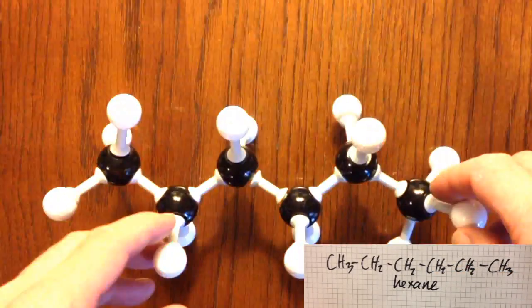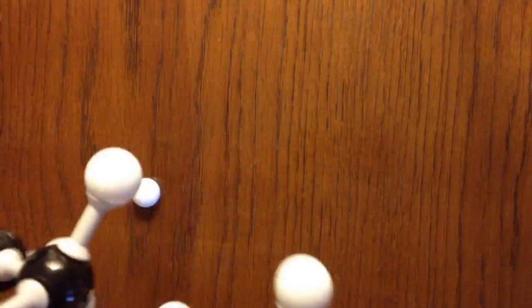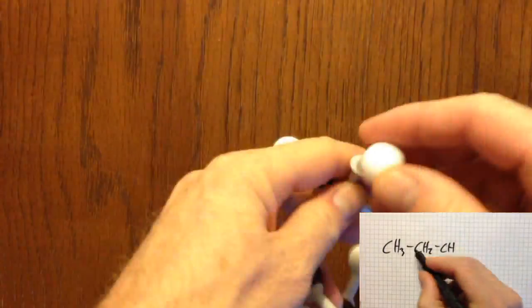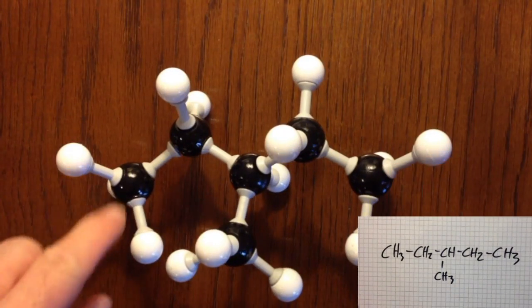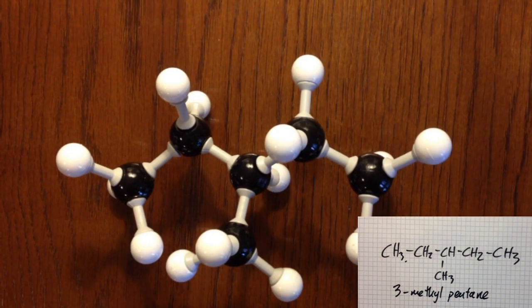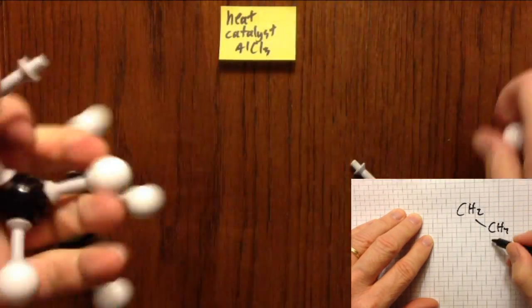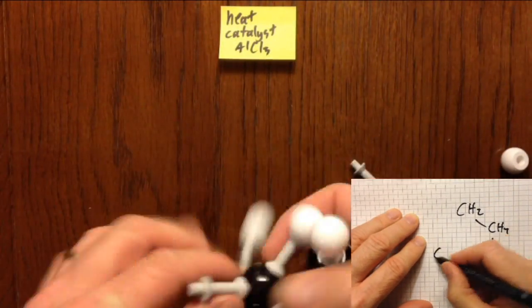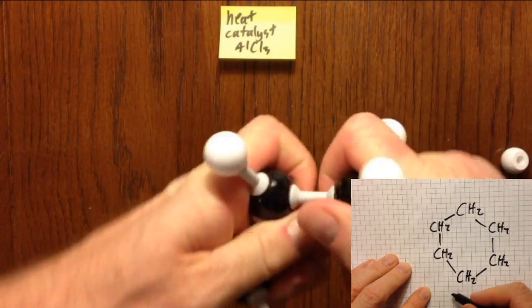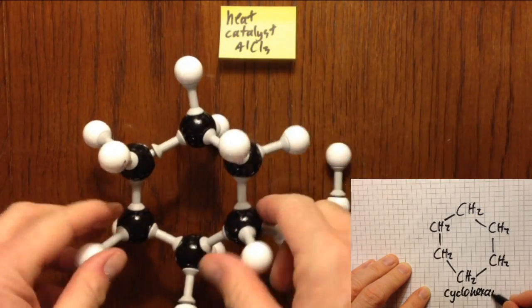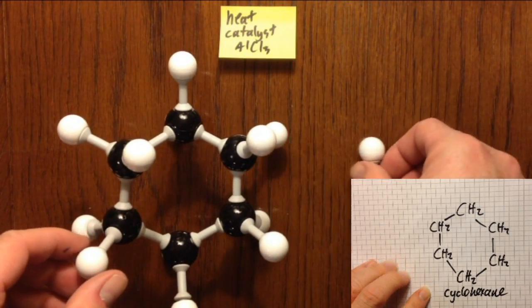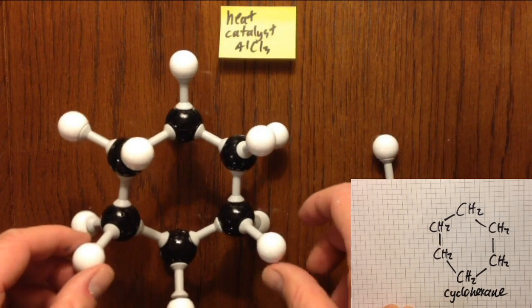Let's look at the hexane example again. Three sorts of reforming. The first one is isomerisation, which is where you put a branch in. Just make sure the branch isn't at the end because then it isn't a branch. The second sort of reforming is cyclisation, which is where you make a ring structure, probably six in a ring. In this case, cyclohexane. Don't forget the hydrogen.